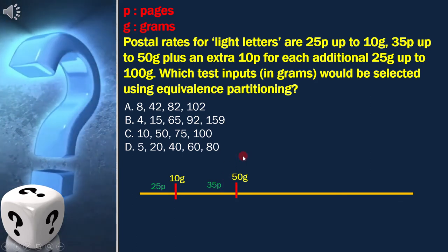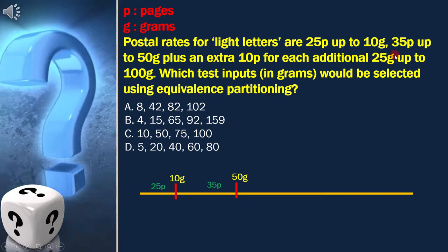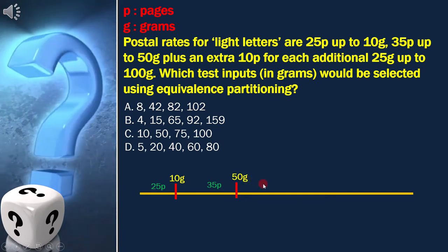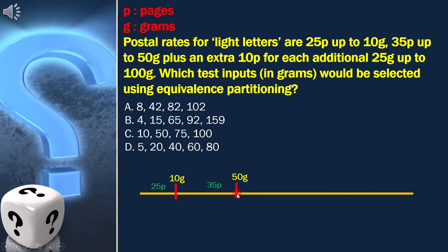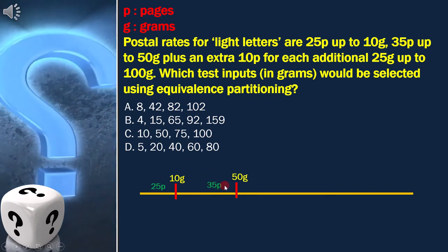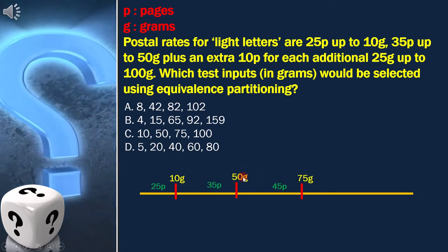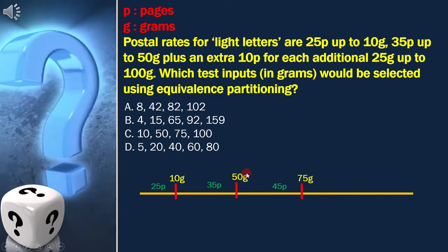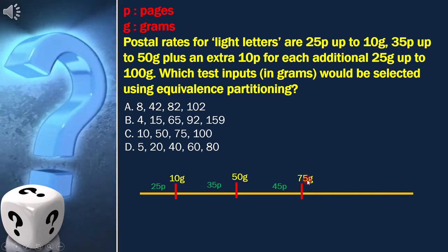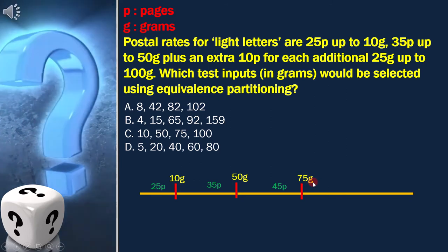Now the next condition is very important. An extra 10p for each additional 25g up to 100g. Here for the next condition, we have to look into the previous condition. Here we have 35 pence, we have to add 10 more pence, with that we will get 45 pence. And in the 50g, we have to add 25g. With this we will get the next boundary, which is 75g. But the condition will not end here as we have not yet reached 100g.